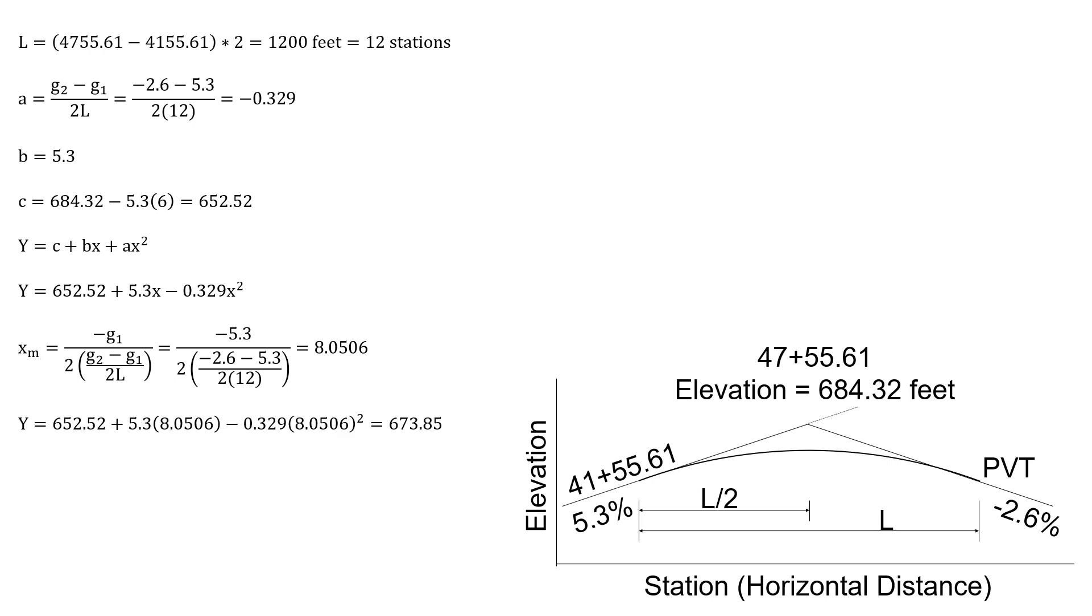So plugging that value X sub m into our parabolic equation Y, we're going to get 652.52 plus 5.3 times 8.0506 minus 0.329 times 8.0506 squared gives us an elevation of our high point of 673.85 feet.